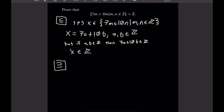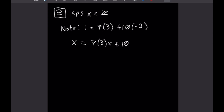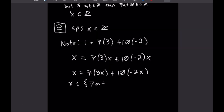For the reverse proof we need to get a little more creative, starting by supposing X is in the set of all integers. From here we note we can express the number 1 as 7 times 3 plus 10 times −2. Then multiplying both sides by X, we have X = 7·(3x) + 10·(−2x). This is of the form of our left-hand side: X equals 7 times the integer 3x plus 10 times the integer −2x. So X belongs to our set 7m+10n for integers m and n, completing this example.